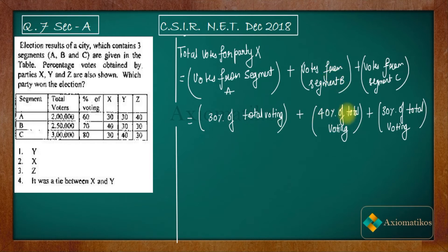And from segment B we are getting 40% of total voting in segment B. So 30% of total voting actually means 30 by 100 multiplied with total voting. So what is total number of voting? It is 60% of this 2 lakh, so it will be 60 by 100 multiplied with 2 lakh.